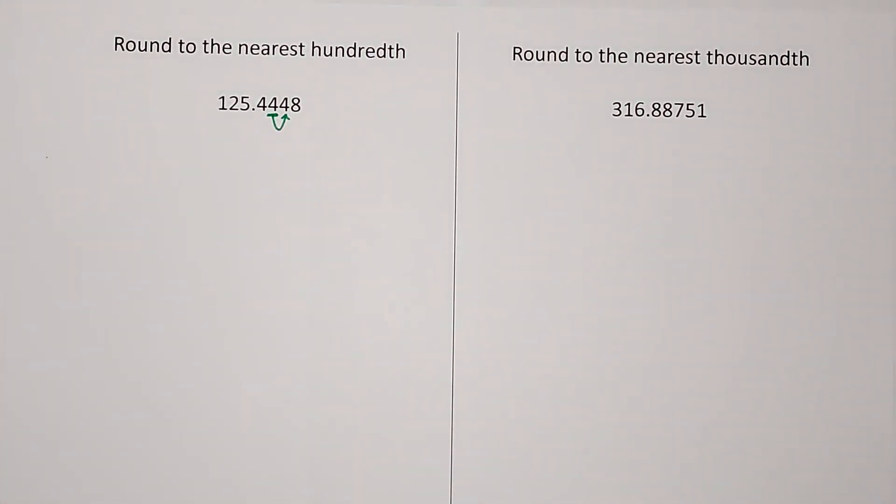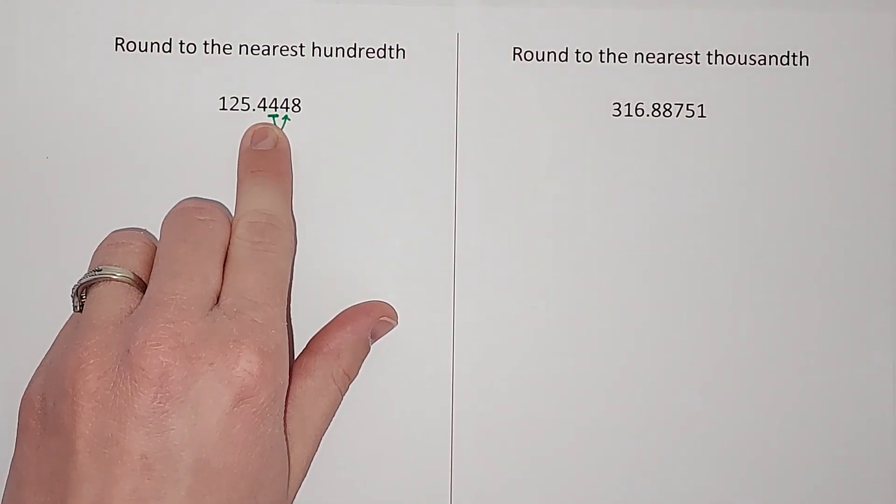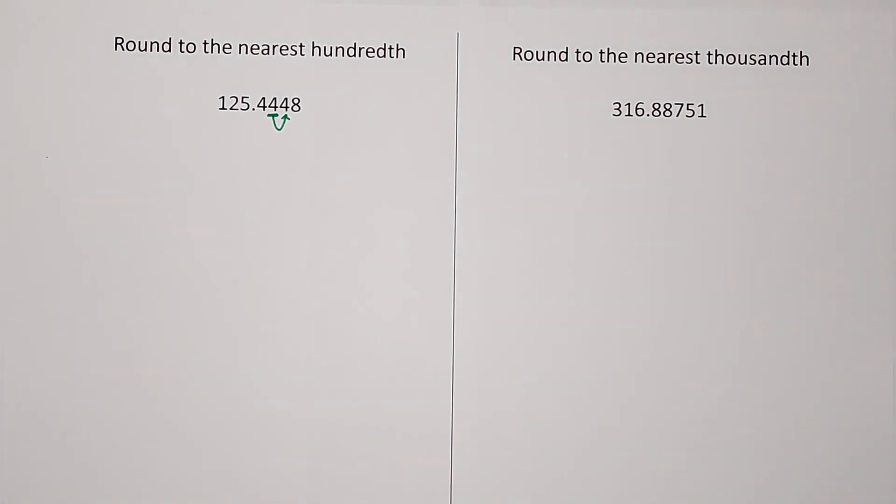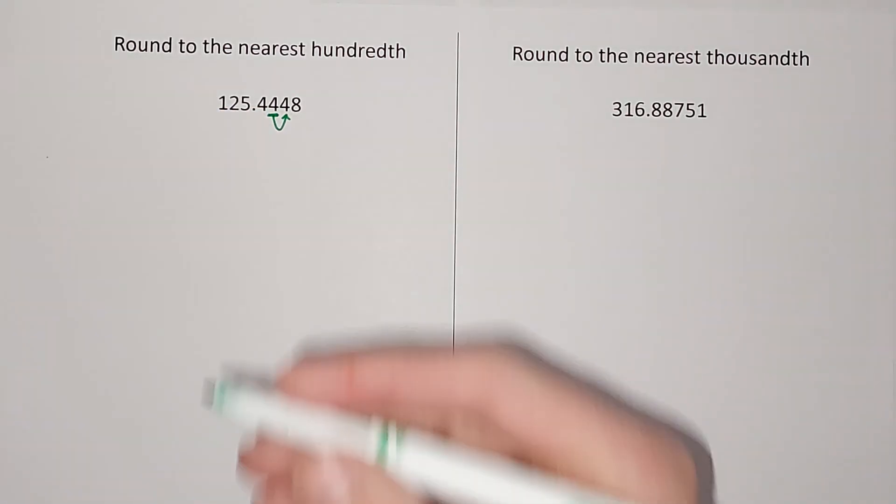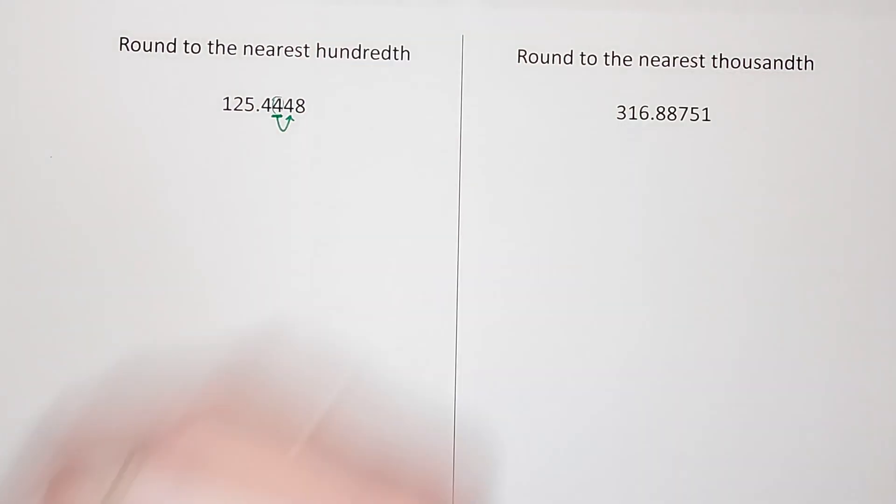If it is five to nine, you round this number up. Okay, so since ours is a four, this number is going to stay a four. So I'm going to have 125.44. So this is that number rounded.